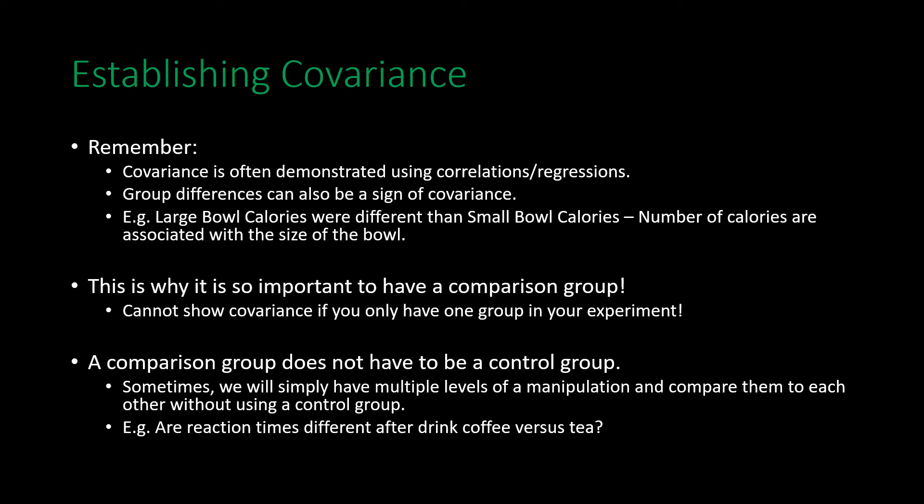A comparison group does not have to be a control group — sometimes we simply have multiple levels of a manipulation and compare them to each other. For example, if interested in the effects of certain types of caffeine on reaction times, we could give half the participants coffee and the other half tea, then measure performance on a reaction time task. In this case, both groups are some form of manipulation; a control group here could be people who drank nothing or drank water with no caffeine.